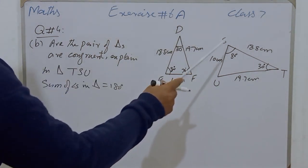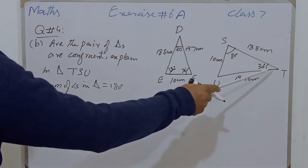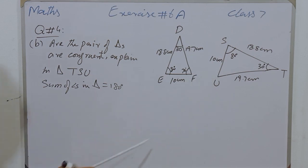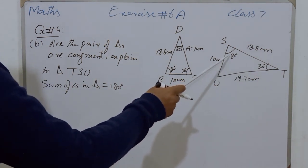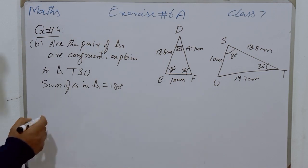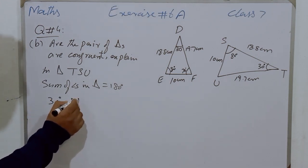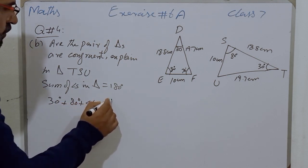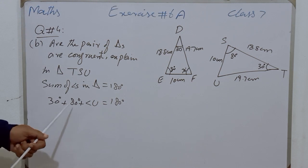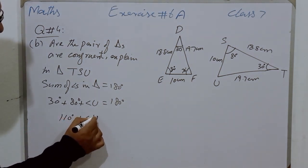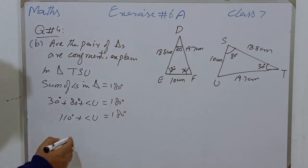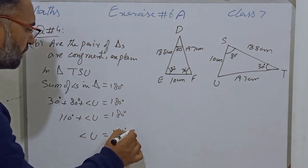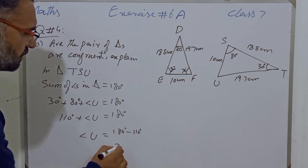In the same way, in triangle TSU we find the unknown Angle U. Using the formula, sum of angles in a triangle equals 180 degrees: 30 degrees plus 80 degrees plus Angle U equals 180 degrees. The sum of 30 and 80 is 110 degrees, plus Angle U equals 180 degrees. Angle U equals 180 minus 110, and the value of Angle U is 70 degrees.